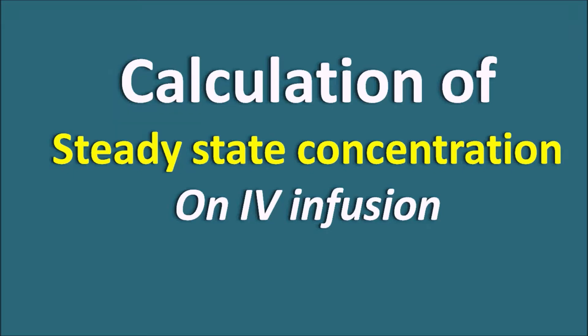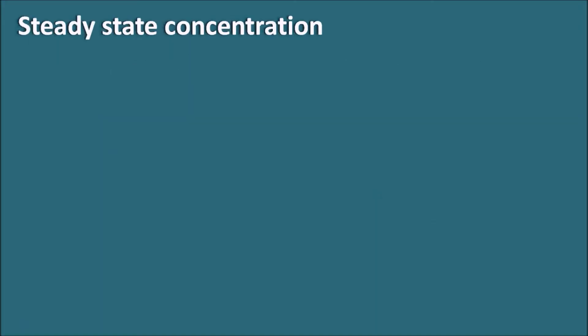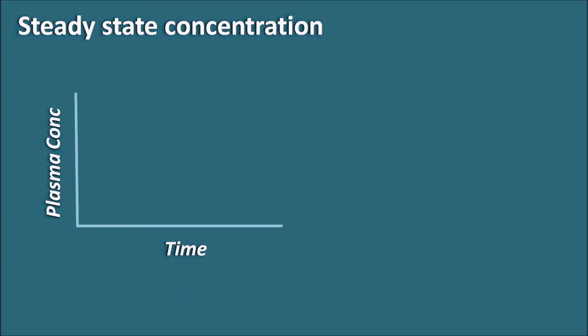Calculation of steady state concentration on IV infusion. What is actually steady state concentration? Suppose this is the plasma concentration time profile and we are giving the drug by IV bolus administration — a single IV administration. When we give the drug by IV bolus administration we can observe a curve where initially we achieve a high plasma concentration, but as it is given as a single dose, the plasma concentration decreases exponentially because of the elimination process.